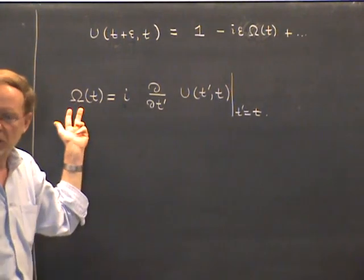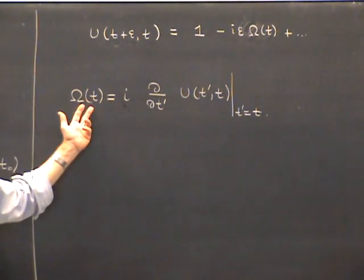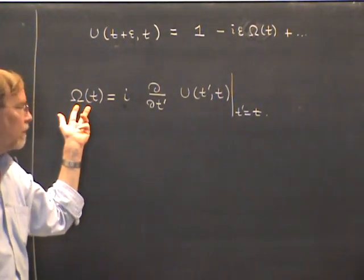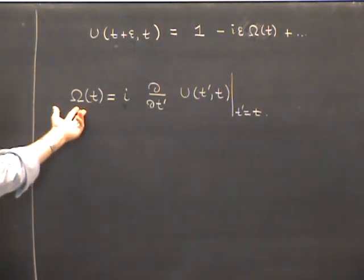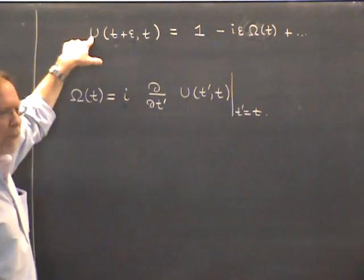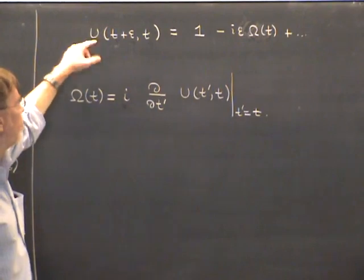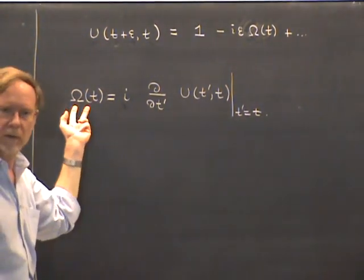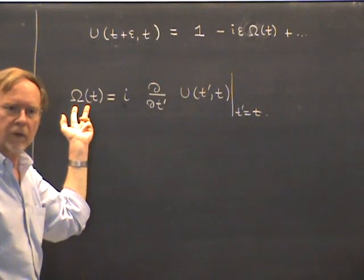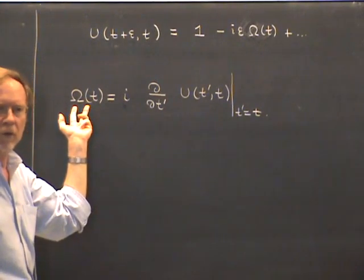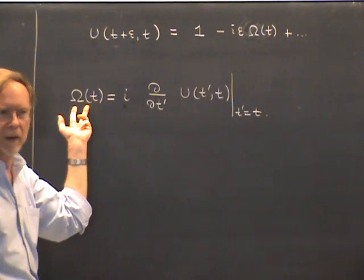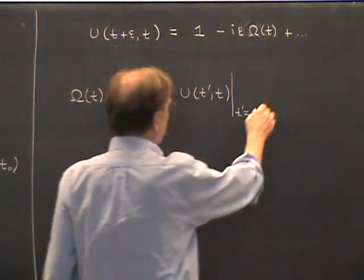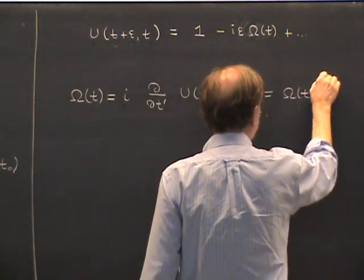The reason Omega is Hermitian is because the original operator U is unitary. If you write down U·U†, you'll find that Omega equals Omega†. So it's a Hermitian operator. I won't go through the proof because it's the same proof we did earlier for the momentum operator. In any case, Omega is Hermitian.